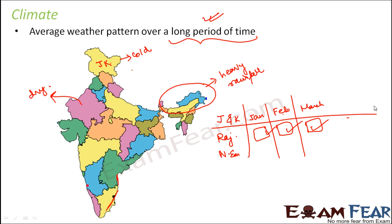So I'm sure now the confusion between climate and weather is clear. So whenever you are talking about the atmospheric conditions of a particular day, it is weather. But when you are talking about the overall weather pattern of a particular place, then it is climate.